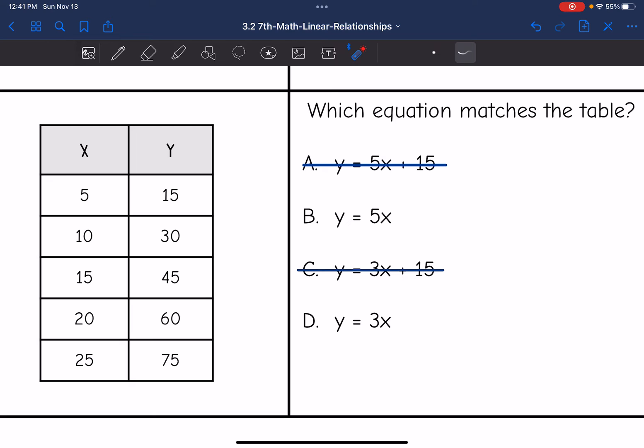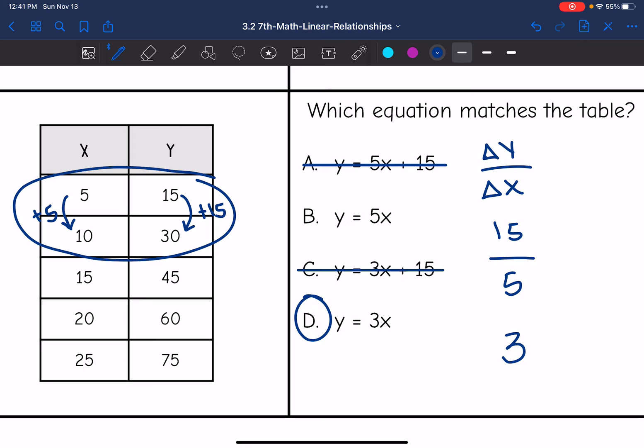The first thing I'm going to do is find the rate of change, which is the change in y over the change in x. I'm going to use these first two ordered pairs. So to get from 15 to 30, I would add 15. So the change in y is 15. And then to get from 5 to 10, I would add 5. So 15 divided by 5 is 3. So this must be our equation, which again is a proportional equation.